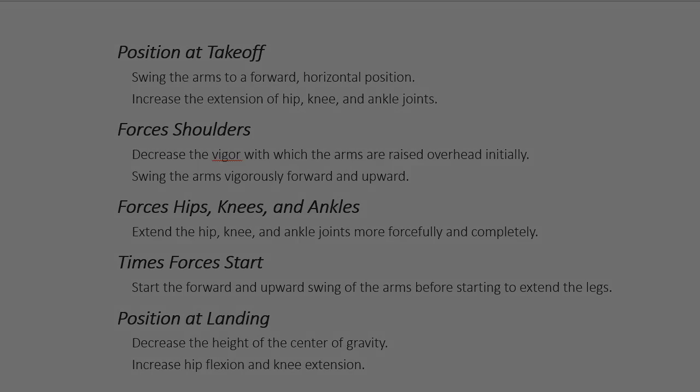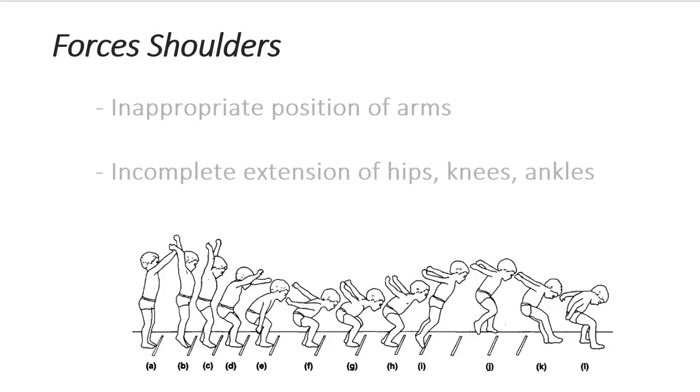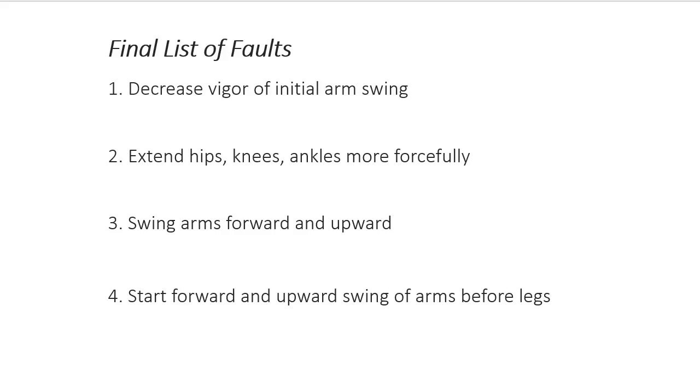And the answer is yes, at least one. The lack of arm swing can be related to inappropriate position of the arms or incomplete extension of the hips, knees, and ankles. So we can reevaluate these after arm swing has been corrected.